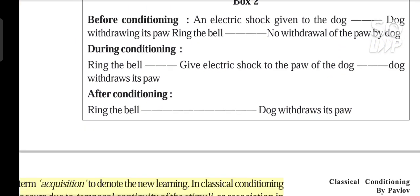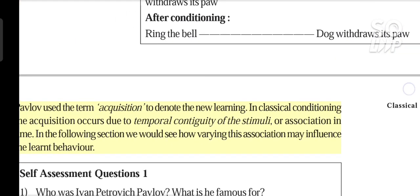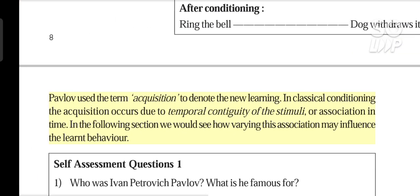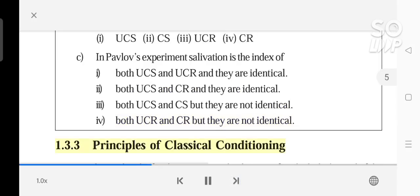Pavlov used the term 'acquisition' to denote the new learning. In classical conditioning, acquisition occurs due to temporal contiguity of the stimuli, or association in time. In the following section we would see how varying this association may influence the learned behavior.